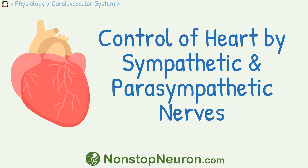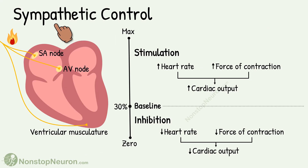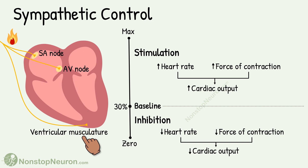In this video, we will talk about the control of the heart by sympathetic and parasympathetic nervous system. Let's get started with the control by the sympathetic nervous system. Sympathetic innervation is seen all over the heart — it supplies the SA node, conductive system, as well as ventricular musculature.